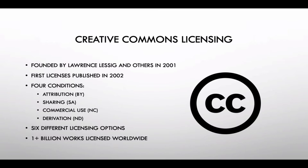The licenses have always had a global application, as it has always been the goal of the organization to promote worldwide sharing of knowledge and creative works. When creators publish their works under Creative Commons licenses, they must consider four conditions. Attribution is attached to all licenses, so that creators are credited for their work. Creators can also determine the terms under which the work can be shared, whether others can use the work for commercial purposes, and the extent to which the work can be modified. Using combinations of these conditions, Creative Commons now provides six different licensing options for works not in the public domain.